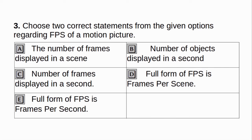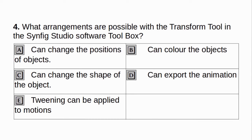Choose two correct statements from the given options regarding FPS of a motion picture. A. The number of frames displayed in a scene. B. Number of objects displayed in a second. C. Number of frames displayed in a second. D. Full form of FPS is frames per scene. E. Full form of FPS is frames per second. Answer: C and E.